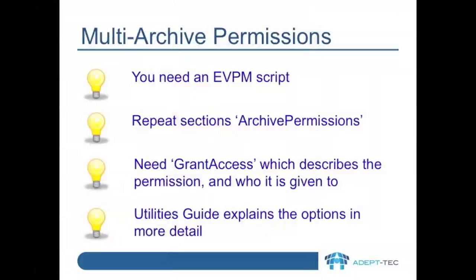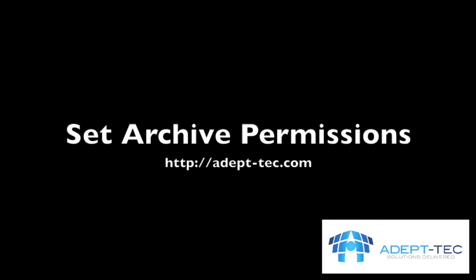So you can see with a simple EVPM script that you can specify multiple archives and grant multiple people permissions to them. You need an EVPM script. You need to have the section archive permissions repeated for each archive you want to touch. And you need a row grant access that describes the permission being given and who to. The utilities guide explains the options in more detail. I hope that showing you how to do this is useful to you. Thank you. Goodbye.